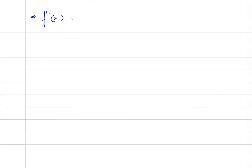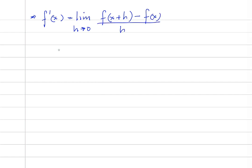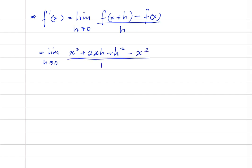So this would be equal to x squared plus 2xh plus h squared. So therefore, by definition, f prime of x is equal to the limit as h approaches 0 of f of x plus h minus f of x, all over h. So this would be equal to the limit as h approaches 0 of x squared plus 2xh plus h squared minus x squared, all over h. And x squared minus x squared is 0, so this is 2xh plus h squared over h.